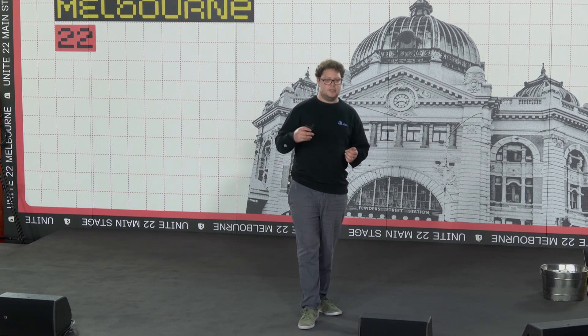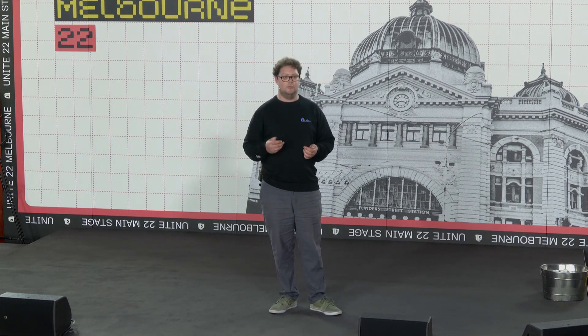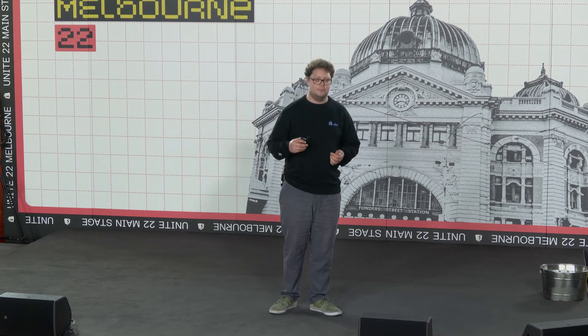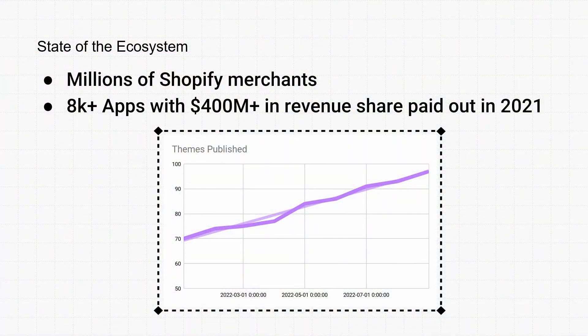All this to say is themes are much more powerful, more adaptable, and more valuable to merchants than ever before. Looking more generally at the ecosystem, we see quite strong and steady growth. Millions of merchants are looking to improve their store and customize their online buying experience. We firmly believe there's a great opportunity here. Last year, 400 million was paid out to our app developers — an increase of over 80% from the previous year.